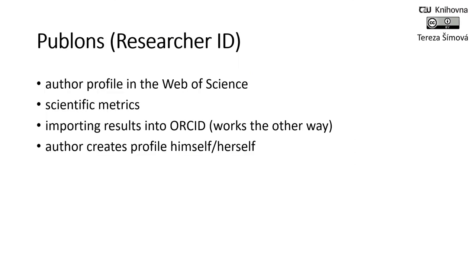Let's now move to the last researcher ID, and that's Publons. Publons is an identifier operating with the Web of Science database. Previously Publons was called ResearcherID, so you may be a little confused because sometimes you will find information about ResearcherID and sometimes about Publons — but now ResearcherID and Publons are the same thing. Publons is an author profile in the Web of Science and makes it easier to identify your publications and calculate your H-index and other metrics. You can create the profile yourself by logging into Publons and then editing your profile.